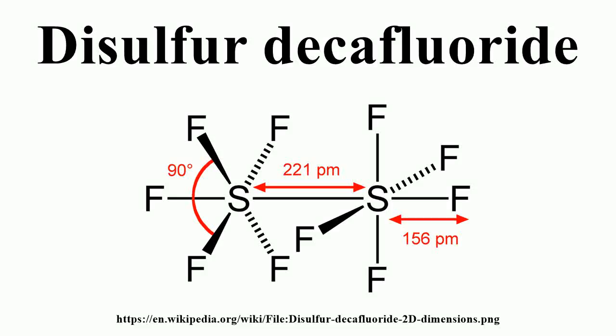Disulfur decafluoride is a gas discovered in 1934 by Denby and Whitelaw Gray. Each sulfur atom of the S2F10 molecule is octahedral and surrounded by five fluorines.